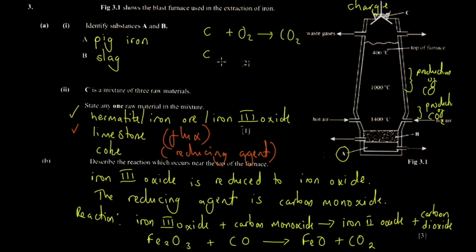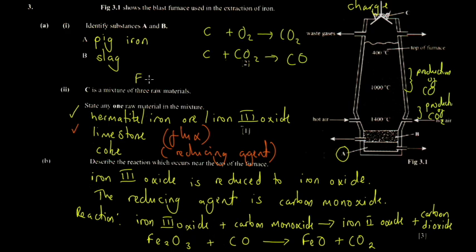Near the center of the furnace, carbon reacts with carbon dioxide to produce carbon monoxide: C + CO₂ → 2CO. This carbon monoxide then acts as the reducing agent near the top. Around 500°C, iron oxide is also reduced by carbon monoxide to produce iron plus carbon dioxide. So the process happens in two stages.